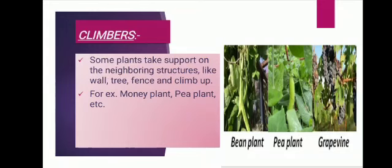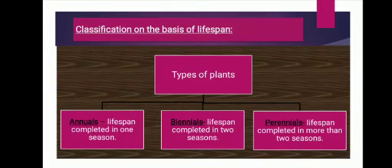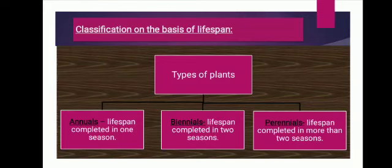On the basis of their lifespan or life cycle, plants are classified into three main types: annual plants, biennial plants and perennial plants. Annual plants complete their life cycle in one season, like wheat and mustard. Biennial plants, like carrots, radish and potato, require two seasons to complete their life cycle. Perennial plants have a life cycle that runs for more than two seasons, like guava, bamboo and palm trees.